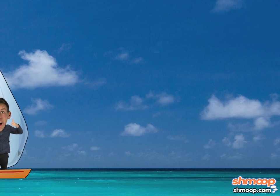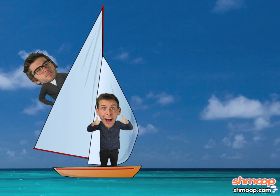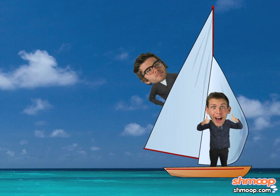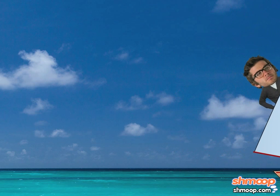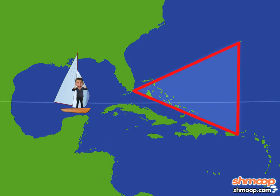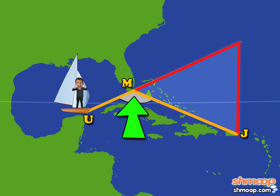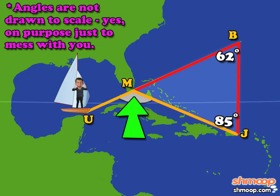You can barely contain your excitement when the captain asks if you want to steer the ship. Before you do, though, he needs you to find the measure of the angle made by the ship, Miami, and San Juan. If the interior angles of the Bermuda Triangle are 62 degrees and 85 degrees, what's the measure of this angle?